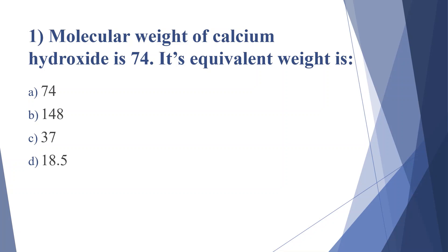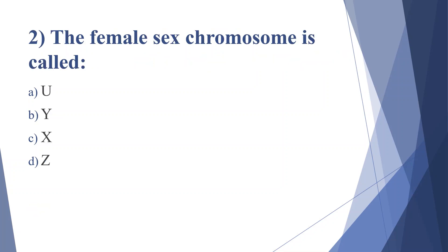Second question: the female sex chromosome is called — option A: U, option B: Y, option C: X, option D: Z. Answer is option C, X.